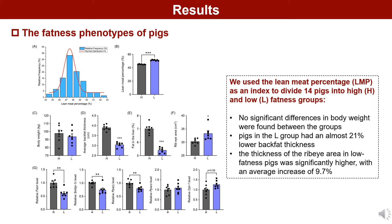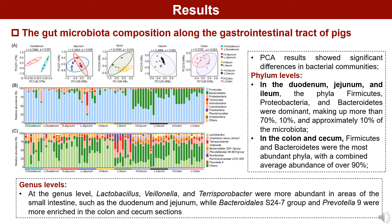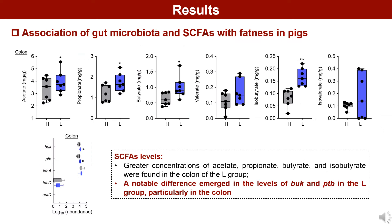Firstly, we used lean meat percentage as an index to divide 14 pigs into high and low fatness groups. The 16S results of PCA showed significant differences in bacterial communities. For short-chain fatty acid levels, greater concentrations of acetate, propionate, butyrate, and isobutyrate were found in the colon of the L group. A notable difference also emerged in the levels of Buk and PTB in the L group, particularly in the colon.